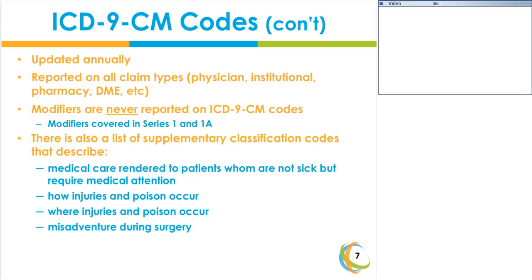It's important to make sure that you are using the most current codes when reporting ICD-9 codes on any of your claims. The ICD-9 coding system is used to report diagnosis codes provided by physicians, institutions — which reflects hospital settings — pharmacies, DME, etc. It is important to note that ICD-9 codes are used in all instances where healthcare is being provided to a patient.